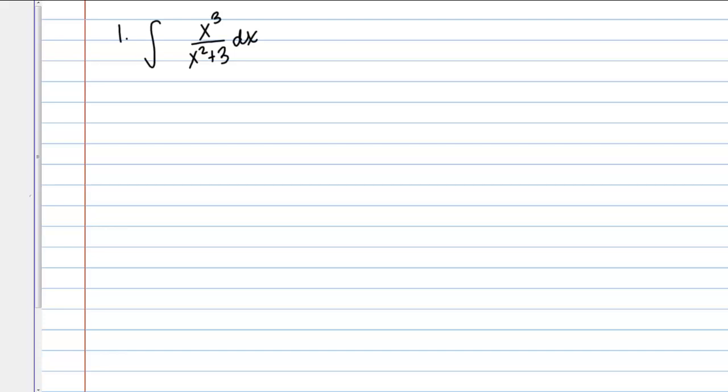This is not something we can handle with simple antiderivative rules. We want to try a substitution to get this into a form we know how to integrate. As always, you can guess what to let u be, but it really comes down to trial and error. Let's try u equals x squared plus 3. Then du equals 2x dx. That doesn't immediately look like it will work since I have x cubed on top and only 2x dx for du.